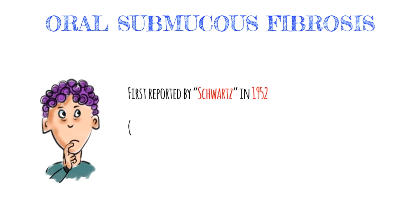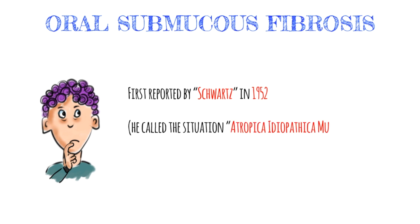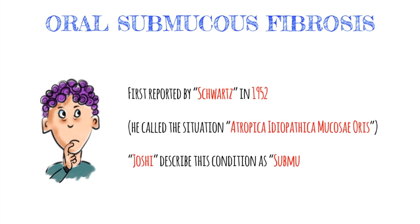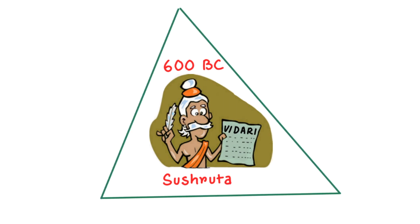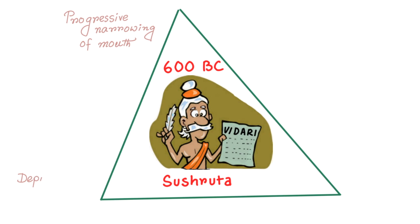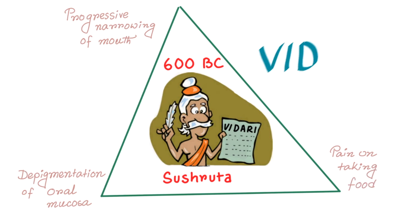It was first reported by Schwarz in 1952 among five Indian females from Kenya, and he called this condition Atropica idiopathica mucosi oris. In 1953, Joshi described this condition as submucous fibrosis. Interestingly, OSMF was described as early as 600 B.C. by Susruta, with features of progressive narrowing of mouth, depigmentation of oral mucosa, and pain on taking food. It was named Vidari by Susruta. So it is an ancient problem.